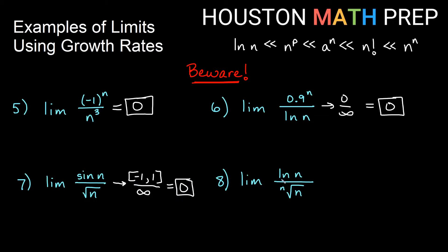For the limit of ln(n) over the nth root of n: logarithmic growth is on the top — the slowest type. Be careful not to interpret the nth root of n as n^n. The nth root of n is n^(1/n), and we should know that limit equals 1, from our previous video. So we have an infinite amount of growth on top and a limit of 1 on the bottom, giving an infinite limit. Make sure both the numerator and denominator exhibit infinite growth before applying these growth-rate shortcuts.